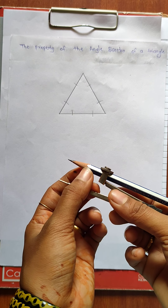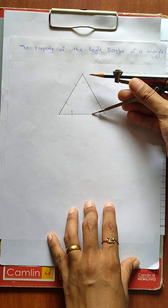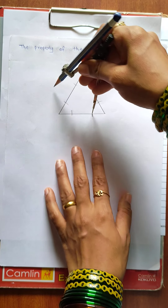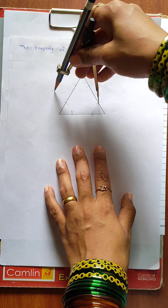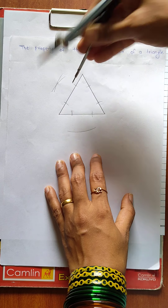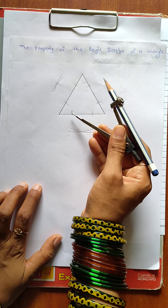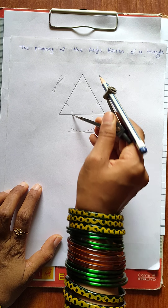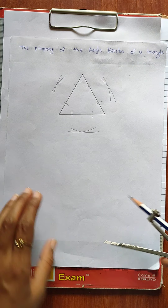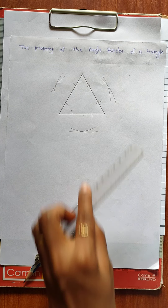With the help of the same compass, we will extend the length between the sharp point and the pencil end, and we will make the angle bisectors. Make sure you keep the same distance — do not change the measurement of the compass once it is set, otherwise you will not get the proper measurement. Now we will join the points.